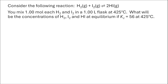Let's consider an example where we are starting with one molar H2 and one molar I2 — one mole of each H2 and I2 in a one-liter flask — so one molar concentrations of our reactants, knowing that this reaction has an equilibrium constant of 56. Here's our reaction.